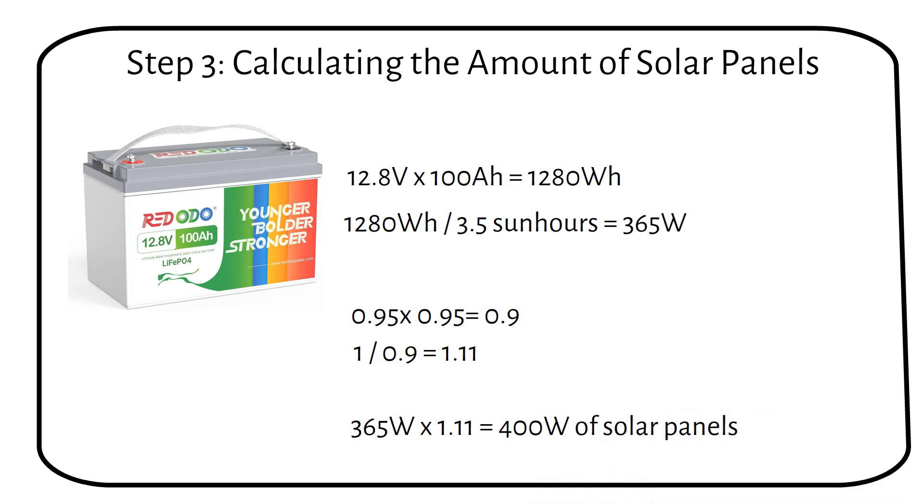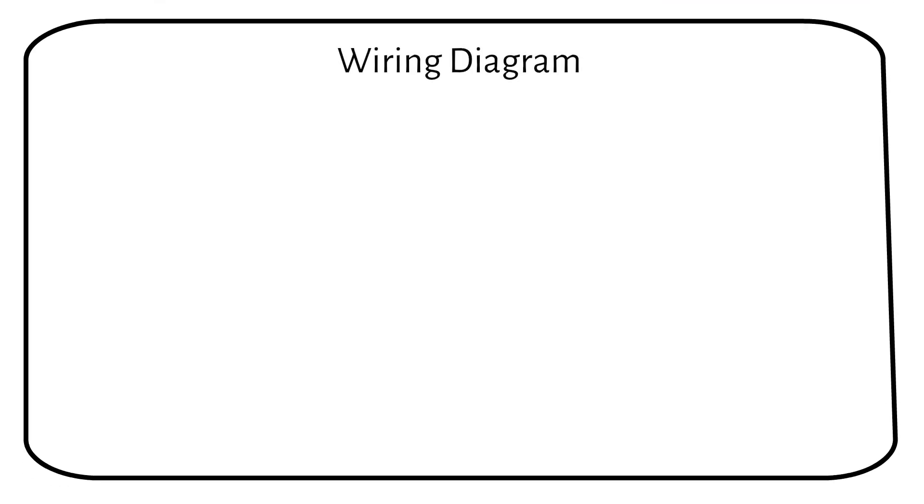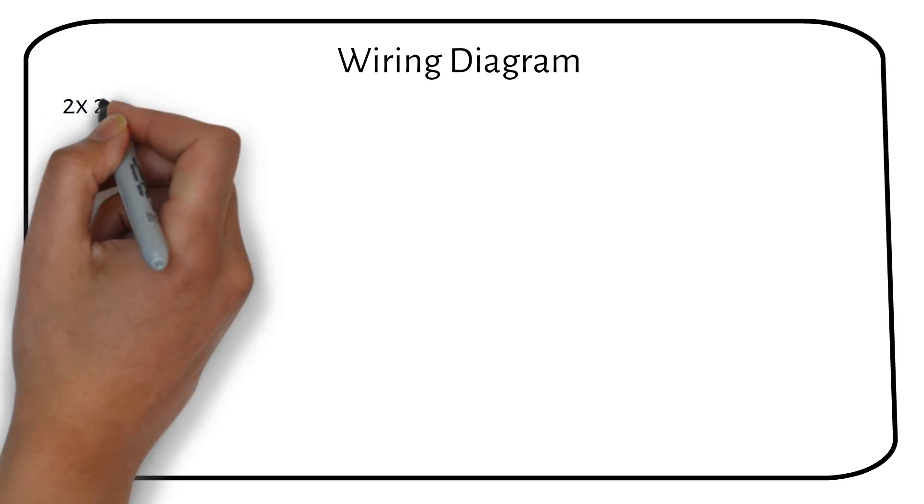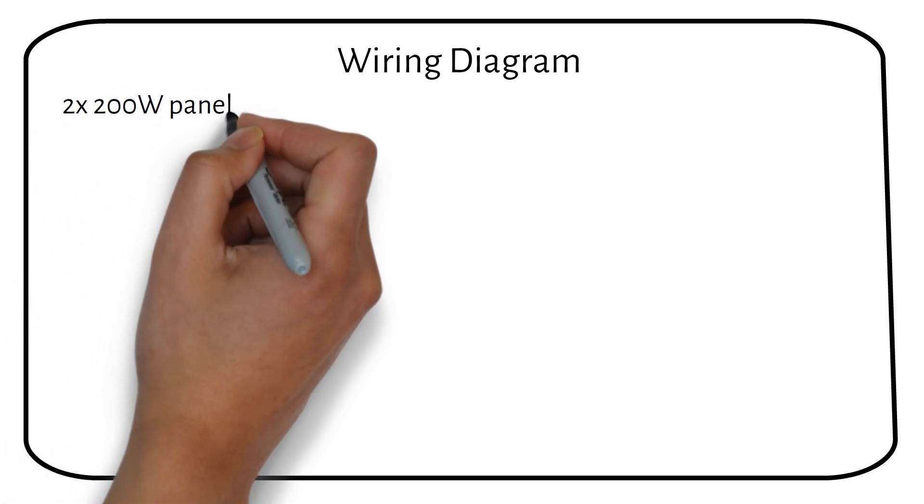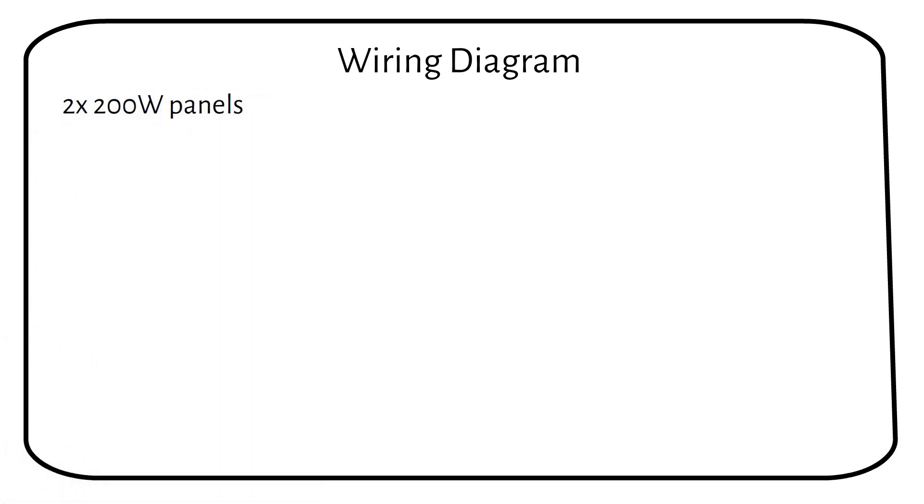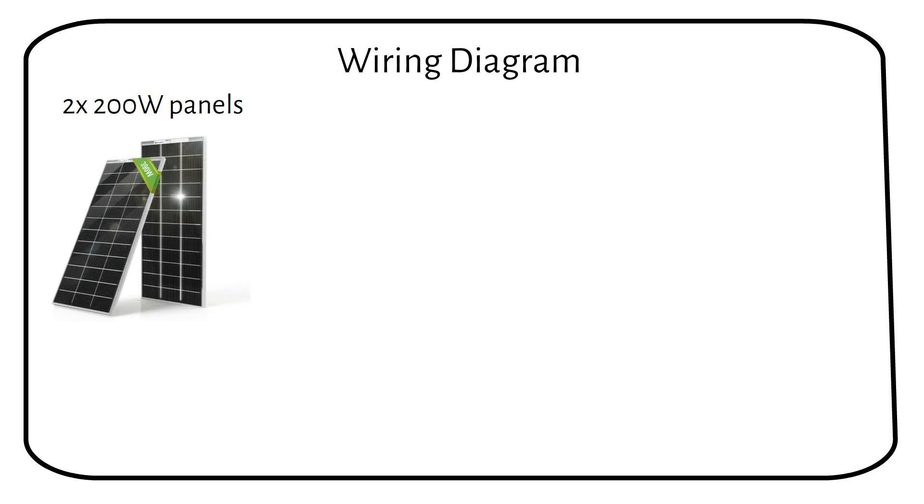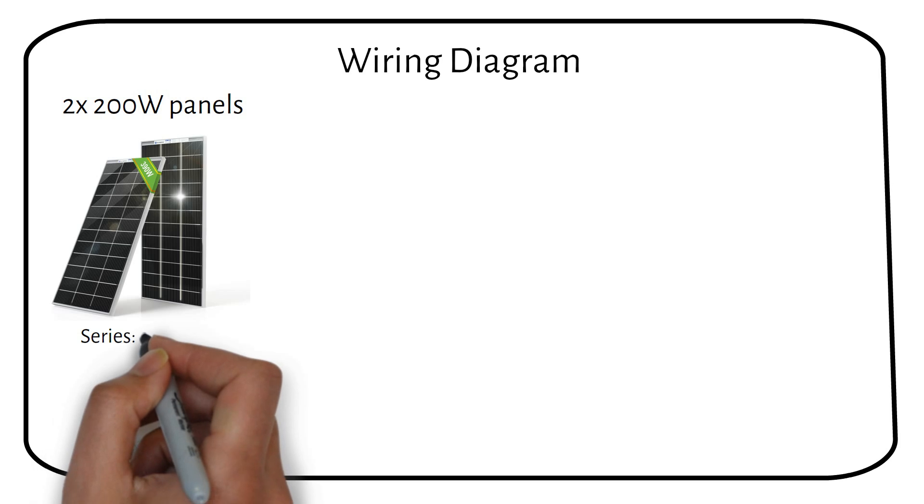I will show different battery sizes soon. Let's take a look at the wiring diagram first. For our setup, we need 400 watts of solar panels. We will go with two 200 watt panels to simplify the wiring. I found two 195 watt panels for $310, which is a good deal compared to the usual $400. We will wire the panels in series.